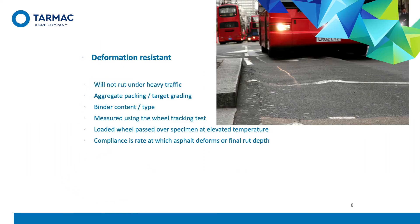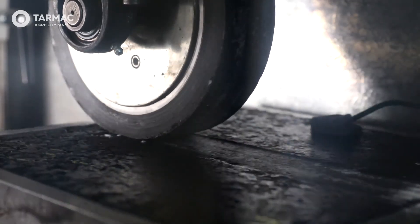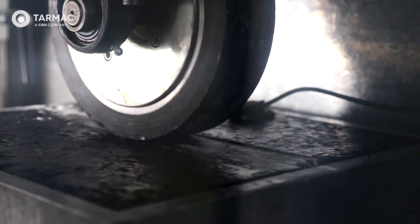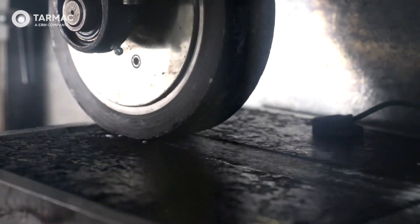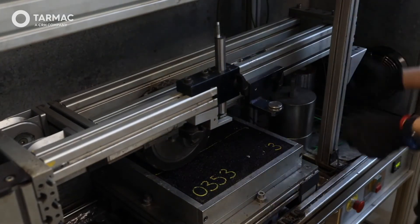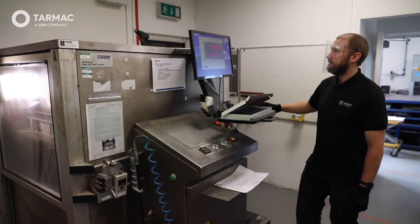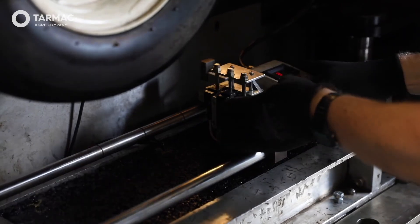We can manage a mixture's resistance to deformation using the aggregate grading and binder content, and type or grade of binder used. The susceptibility of a mixture to deform under load is assessed using the wheel tracking test. This entails subjecting the asphalt to repeated passes of a loaded wheel at a constant elevated temperature and recording the degree of rutting that has occurred. Different devices are used for different mixtures with typical testing temperatures of 60 degrees. Hot rolled asphalt is given 1,000 cycles in a small device, SMA 10,000 cycles, whereas a mix like EME2 is given 30,000 cycles in a large device.